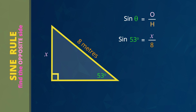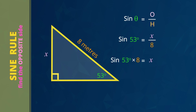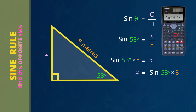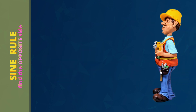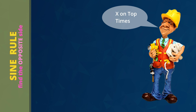Now we want to find X. Since X is divided by 8, multiply both sides by 8 to leave X by itself. So X equals sine 53 multiplied by 8. Doing this in one step on the calculator, the answer is X equals 6.4 meters. That means if the angle is 53 degrees and the slope length is 8 meters, the vertical height is 6.4 meters. Remember the tip: if X is on the top, you times in the next line — T for top, T for times.